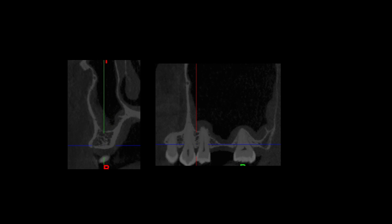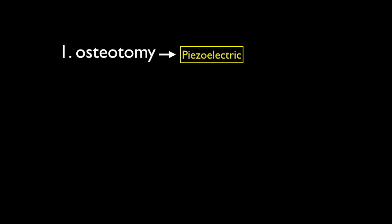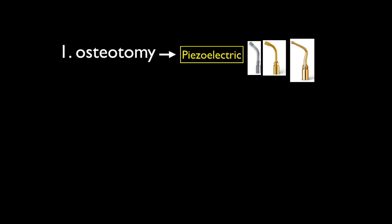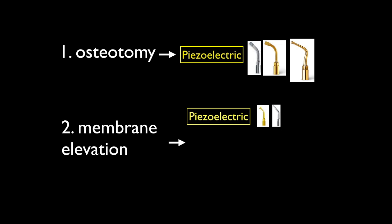So we do not expect any particular anatomic difficulties in this case. Our plan is to continue with osteotomy using piezoelectric cutting tips — in the beginning we will use the straight diamond-coated cutting tips to generate the initial shape of our window, which we will finalize afterwards with a round-shaped diamond tip. Once the window has been detached and mobilized, we will continue with initial membrane elevation using the piezoelectric tips and then finalize the elevation with hand instruments.